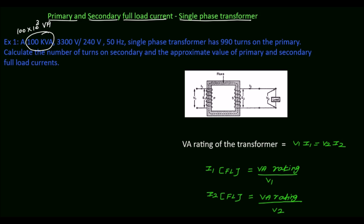The given data is 3300 volt / 240 volt. That means the EMF induced in the primary, E1, is equal to 3300 volts, and the EMF induced in the secondary, E2, is equal to 240 volts. The frequency is given as 50 hertz, so F is equal to 50 hertz.